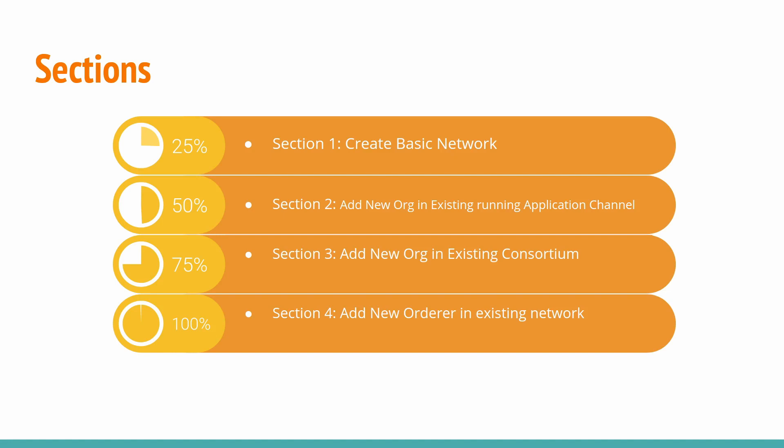In the final section, Section 4, we will add a new orderer in the existing network. The basic network created in Section 1 will have three different orderers, and in Section 4 we will add a fourth orderer to the existing network. These are the four steps we are going to cover, and once comfortable with these steps, you can update anything in the network.